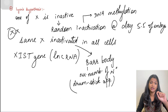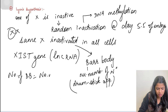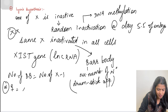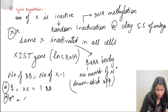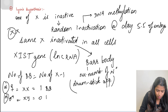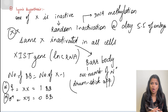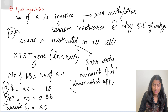The Barr body determines the sex — it indicates female. The rule for Barr bodies is: number of Barr bodies = number of X chromosomes minus 1. A normal female (XX) has 2X, so 2 minus 1 = 1 Barr body. A normal male (XY) has 1X, so 1 minus 1 = 0 Barr bodies. In Turner syndrome (45 XO), there is also 1X, so 1 minus 1 = 0 Barr bodies, same as a male.